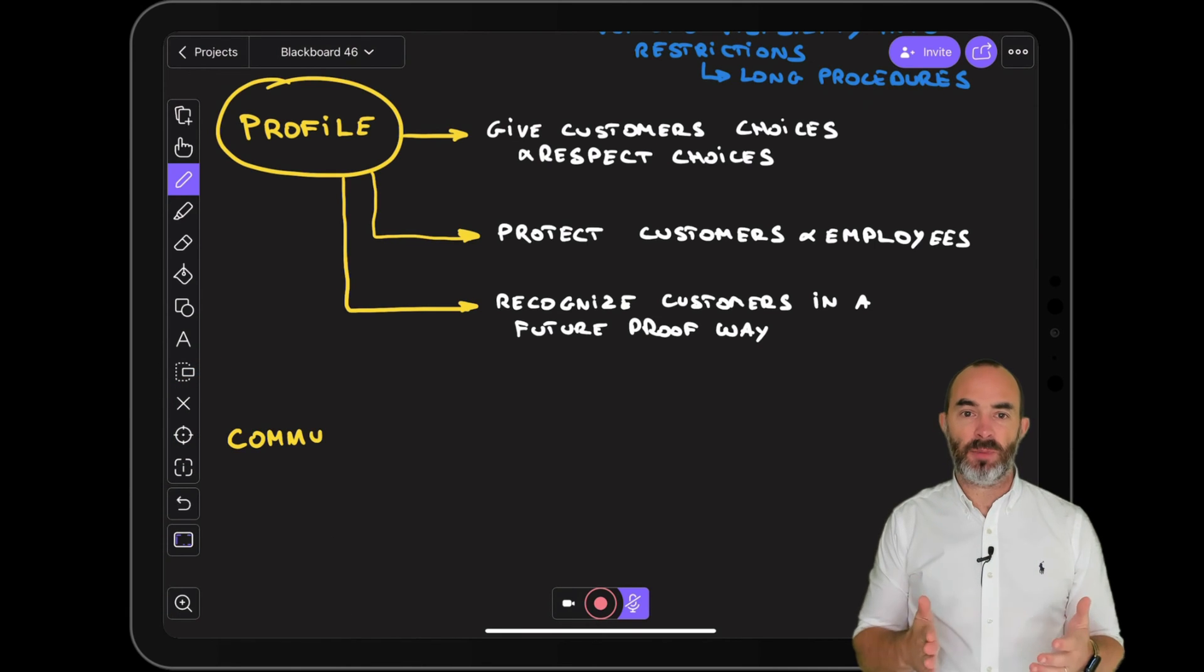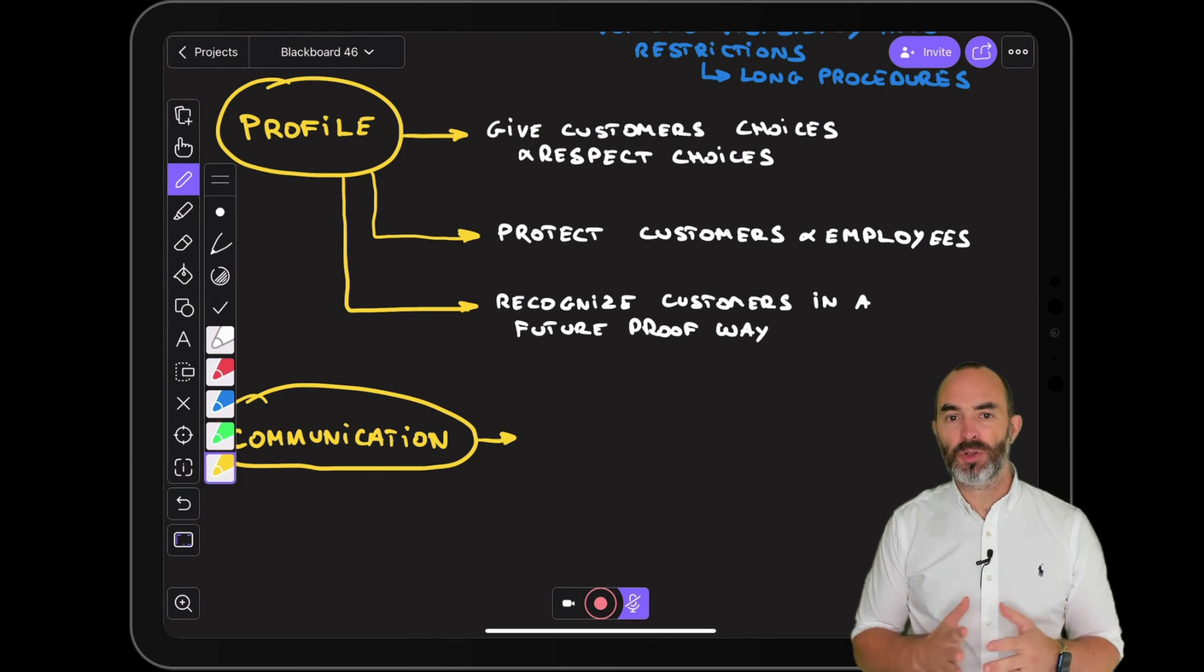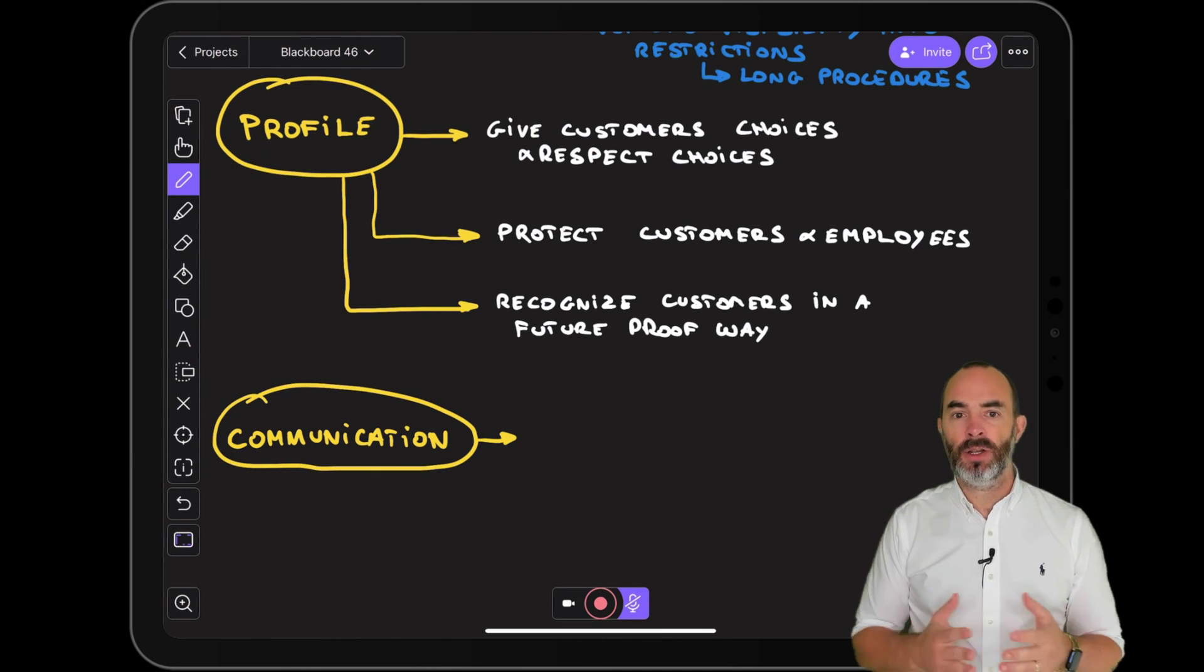The third part which is impacted by data governance is the communication between you and your customers. All data that is collected is subject to regulations and policies as already mentioned before. Today there's a big focus on the usage of customer data and how to use that data in the context of customer experiences.